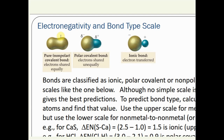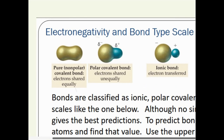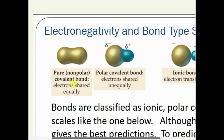In a nonpolar bond, the electron cloud is relatively symmetrical — electrons spend equal time around each atom. In a polar covalent bond, the electron cloud is distorted; electrons spend most of their time around the more electronegative atom, giving rise to partial positive and partial negative charges. For hydrogen fluoride, hydrogen is the δ+ end and fluorine is the δ− end. The shared pair in the covalent bond is unequally shared.